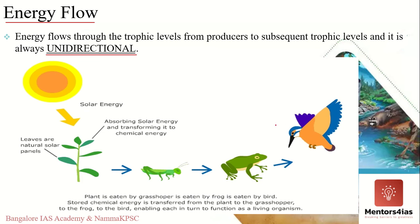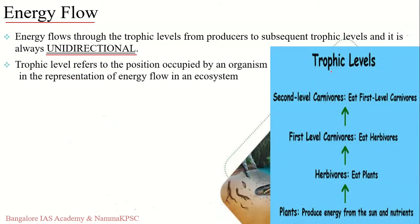To better understand energy flow in the ecosystem, we need to consider trophic level interactions. The trophic level refers to the step, place, or position occupied by an organism in a nutritive series of an ecosystem. The classification of organisms into different trophic levels depends upon their feeding behavior.